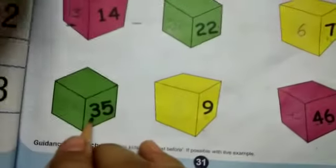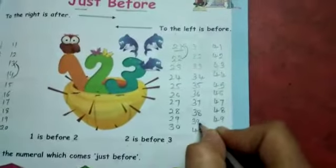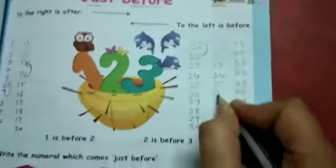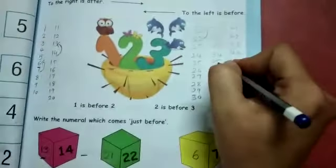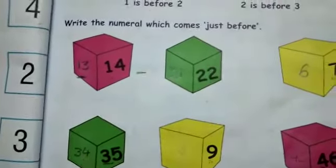Next, 35. 31 to 40 mein 35 number aaya. Toh yaha pe hume count karenge hai - 40, 39, 38, 37, 36, 35. 35 ke before number is 34. Write down 34.